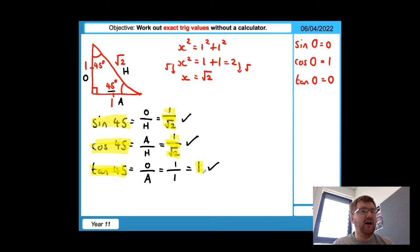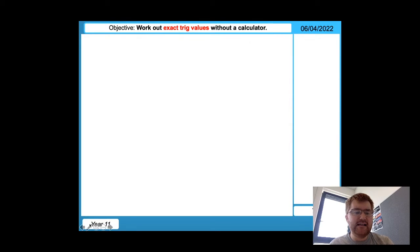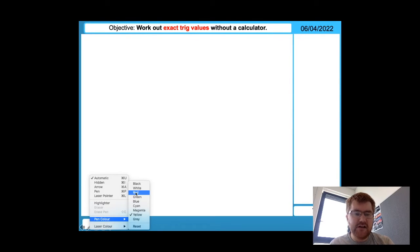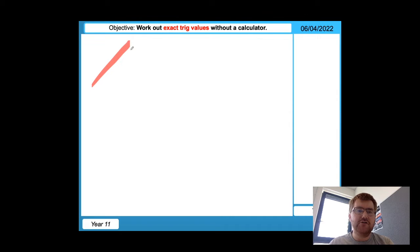So those are the three out of the nine values that you need to know off by heart. Now, my second triangle is a little bit different. So I'm going to start with a triangle that doesn't look like this. There we go. So I'm going to draw a triangle that looks like this. I'm going to make each side two, not one, and I will show you why a bit later on.